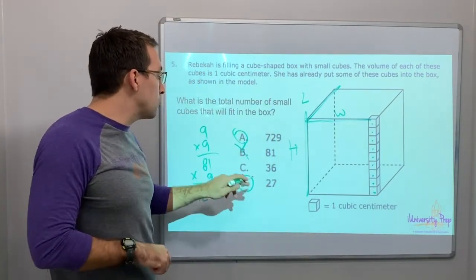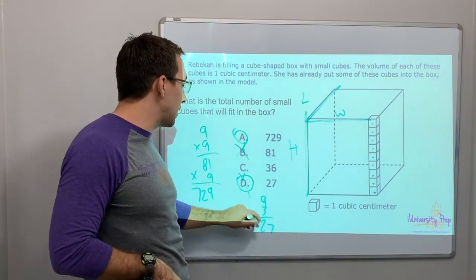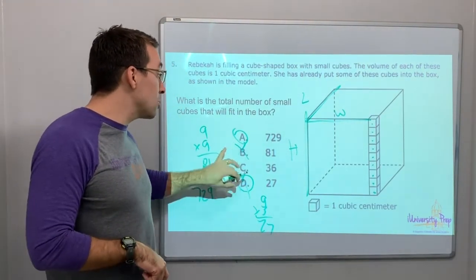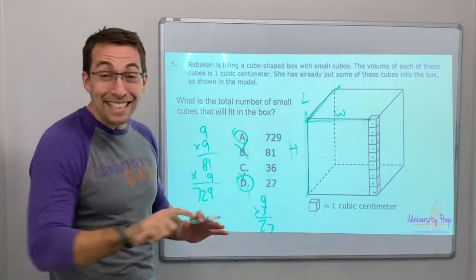And twenty-seven, look, if you do twenty-seven, nine times three, well, that is twenty-seven, right? Wrong. They give you two of the answers that are... You're like, oh, that could be right. It's not right.